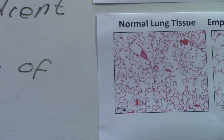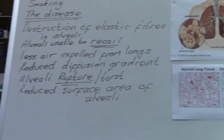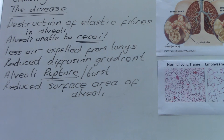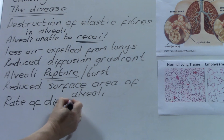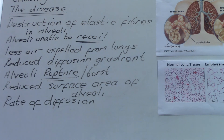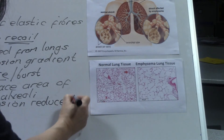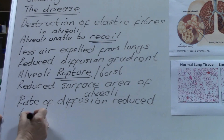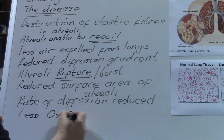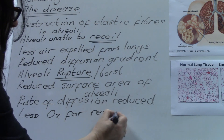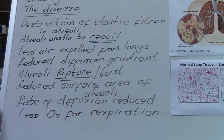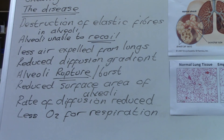The combined effect of the reduced diffusion gradients and the reduced surface area of the alveoli means that the rate of diffusion of oxygen into the bloodstream — and carbon dioxide back out — is greatly reduced. So we've got less oxygen entering the blood, which means less oxygen available for respiration. This can lead to some very unpleasant effects like tiredness, as well as quite a lot of serious symptoms that go along with emphysema.